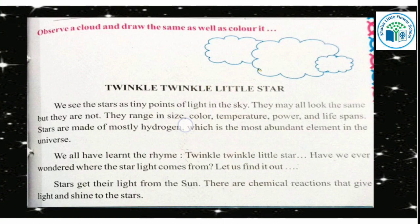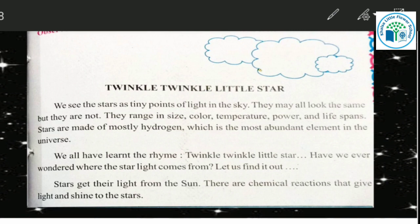We see stars as tiny points of light in the sky — small spots of light. They may all look the same, but they are not. Stars range in size, color, temperature, power, and life spans. They are all different — different sizes, colors, temperatures, power, and how long they exist. But to us they all look the same. Stars are made mostly of hydrogen, the most abundant element in the universe.